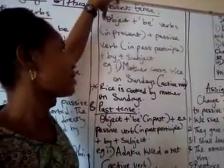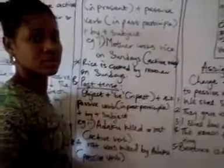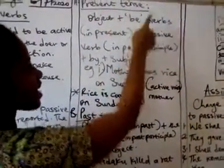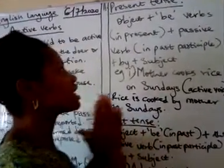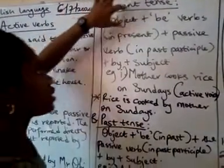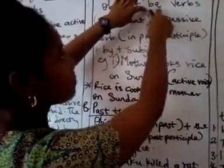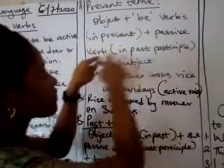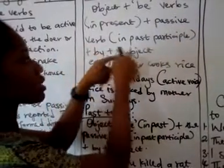There are rules guiding how to change from active to passive, and these rules cover all their tenses. The first one is the present tense. It is just like mathematics — English mathematics. When you are changing present tense from active to passive: the object at the end comes first, plus the B verbs in the present, plus the passive verb in past participle, plus 'by,' plus the subject.